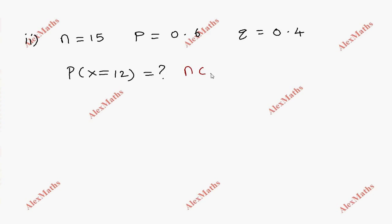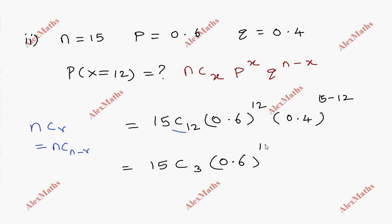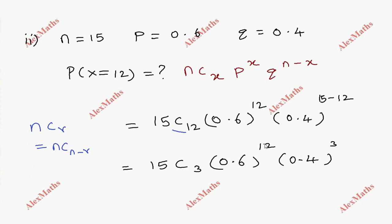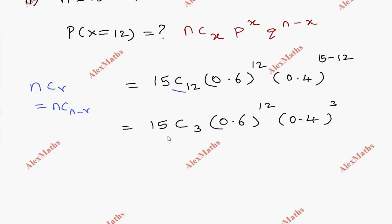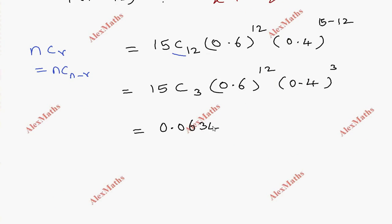Using the formula P(x) = nCx × p^x × q^(n−x), we get 15C12 × (0.6)^12 × (0.4)^3. Note that 15C12 = 15C3, and (0.6)^12 × (0.4)^3 is the same as in the previous subdivision. Therefore P(x=12) = 0.06348.